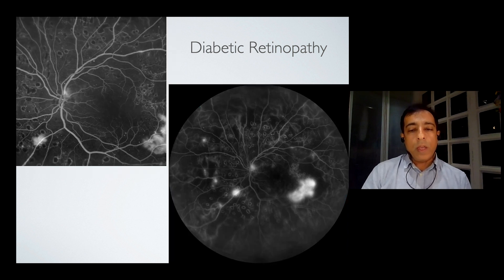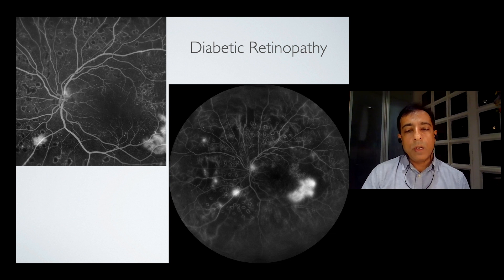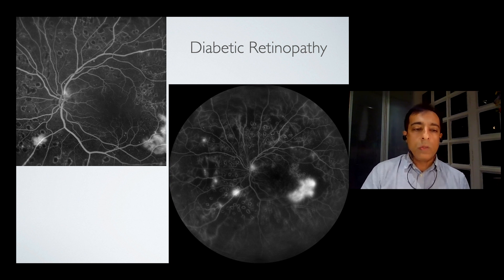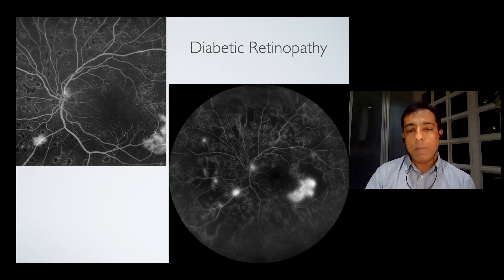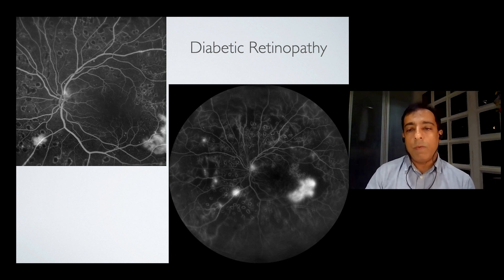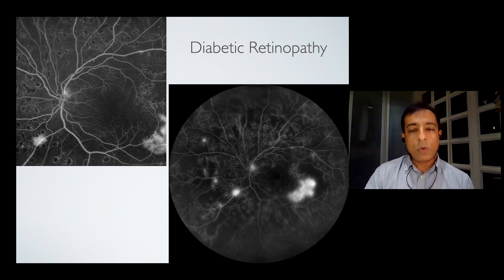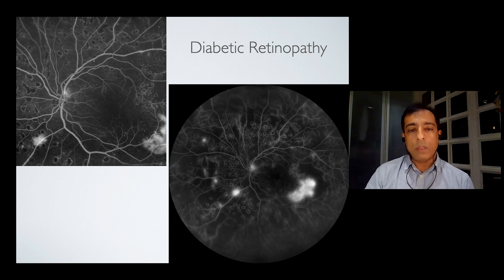As you do the angiography, you see the extent of CNP areas as well as the proliferations. Also on the nasal side, you see in the peripheral field a few areas of leak which would require a lot of top-up laser to regress these lesions.